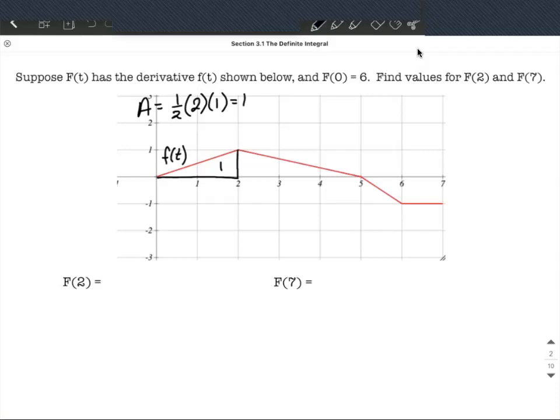So F of 2, the starting position was at 6, and it's increasing by 1 unit because of that area. So it's going to end up big F of 2 works out to be 7.